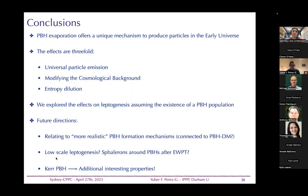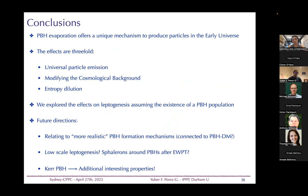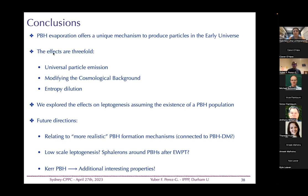To conclude: primordial black hole evaporation offers a unique mechanism to produce particles — fundamentally different from standard particle physics interactions, coming instead from the Hawking effect. There can be interesting interplay between thermally-produced particles and Hawking evaporation. Summarizing, there are basically three effects: universal particle production regardless of interactions, modifications to the cosmological background, and entropy dilution.